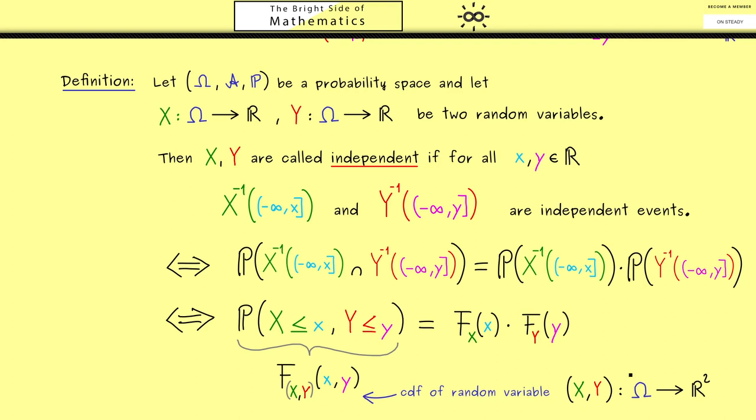Hence here the input space is still omega, but the output space is R^2. In summary, with this independence is easy to remember. It simply means that this CDF can be written as the product of these simple CDFs.